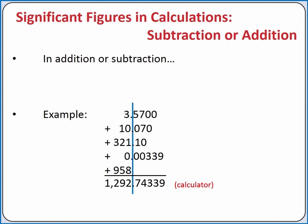We'll round our answer to the ones digit so that it becomes 1,293. Notice that our answer has 4 significant figures in it, even though some of the numbers in our addition had only 3 significant figures. With addition and subtraction, we only look with respect to the decimal point.